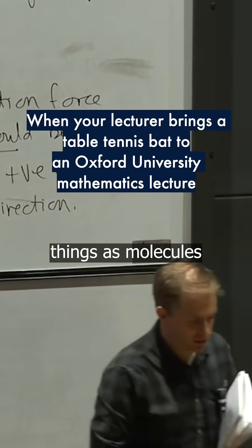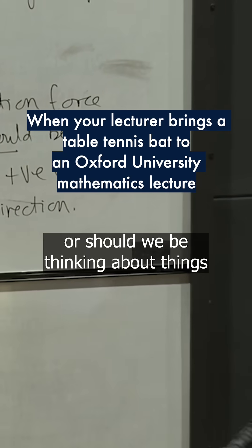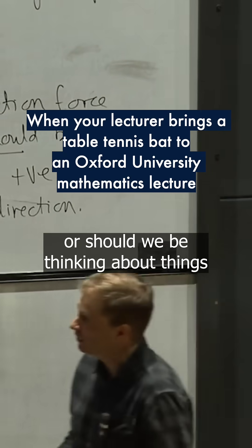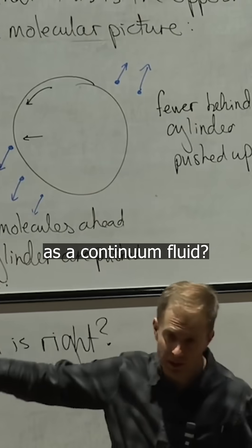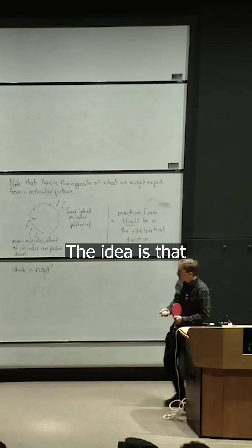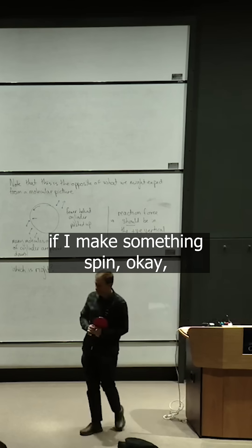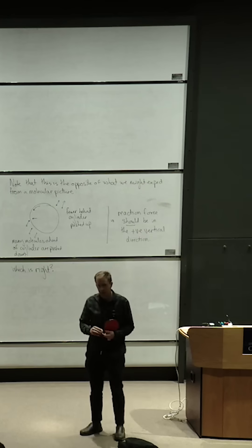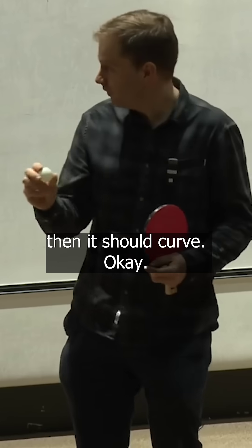Should we be thinking about things as molecules or should we be thinking about things as a continuum fluid? The idea is that if I make something spin, then it should curve.